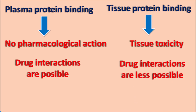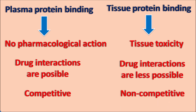Plasma protein binding is competitive in nature. If a highly lipophilic drug is present, it can displace one of the drugs with low lipophilicity from the plasma protein binding sites, which may result in drug interactions. But in case of tissue protein binding, it is non-competitive in nature, so such drug interactions are not observed. These are the differences between plasma protein binding and tissue protein binding.